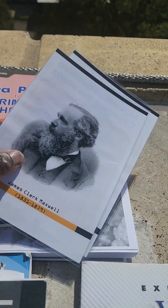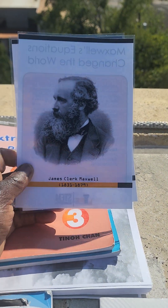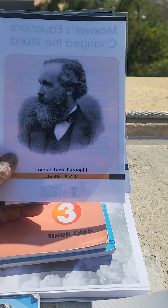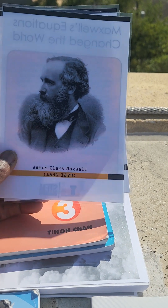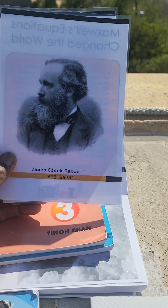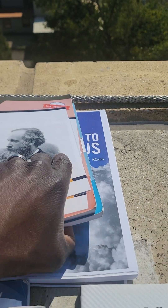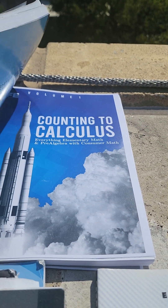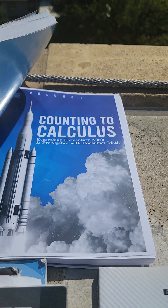We have four volumes coming out. The first volume covers 50 cards, the second volume 50, the third 50, and the fourth 50. Basically, when you order the Counting to Calculus workbook, you have the flashcards that go along with it and you can use them to review.